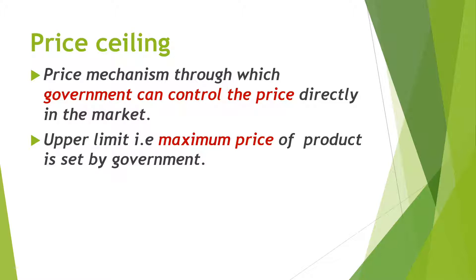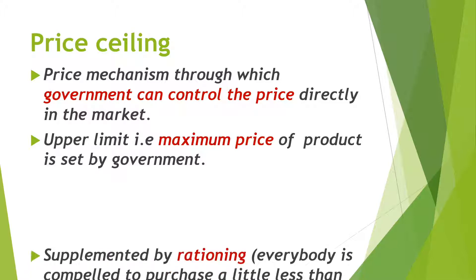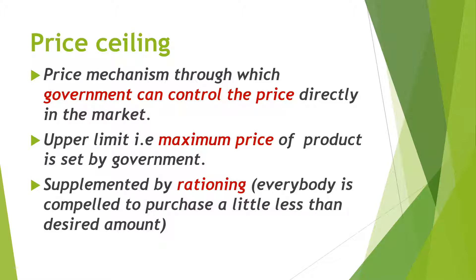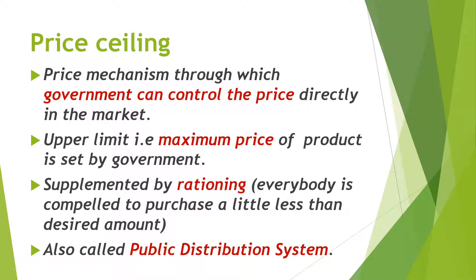Now the government interferes in this matter and sets a price ceiling — meaning you cannot charge more than a certain price for the product. But even with the price fixed, demand is still high. So the government also introduces rationing — setting a limit that every person will not receive more than a fixed amount. For example, you will get only 1.5 kg of wheat per purchase. This rationing process helps manage excess demand, and we call this a public distribution system.